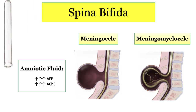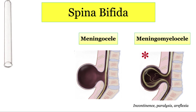Next for spina bifida are meningocele and meningomyelocele. Both will involve herniation, but only meningomyelocele will have the spinal cord herniating outwards. You can remember this because myelo refers to myelin, so a meningomyelocele involves both the meninges and the spinal cord, while a meningocele only involves herniation of the meninges. You should expect a higher likelihood of neurological impairment in the lower extremities with meningomyelocele — specifically, incontinence from cauda equina involvement, as well as bilateral leg paralysis and areflexia with absent sensation in both lower extremities.